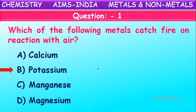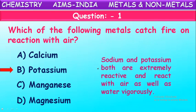Potassium reacts with atmospheric air immediately. If you take a small piece of potassium and keep it in your hand, it immediately starts burning. Sodium and potassium are extremely reactive metals and react with air as well as water vigorously. That is why these metals like sodium and potassium are stored under kerosene. Highly reactive metals - sodium, potassium, rubidium - are stored under kerosene. When needed, a sample is taken and the remaining is stored back into kerosene. Potassium is the correct answer here.